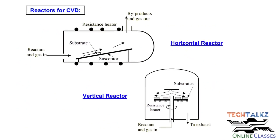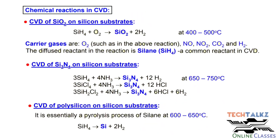Different types of chambers are used: horizontal type and vertical type. In the horizontal direction, the carrier gas and reactant gas are introduced — that is a horizontal chamber. The substrate will be tilted for uniform deposition. In the vertical direction, we apply a gas mixture, uniformly deposit it, spread it, and rotate it.